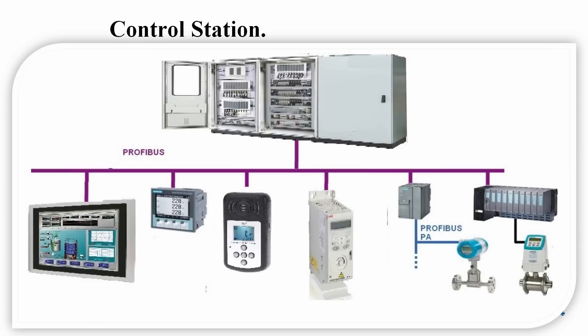Some signals go directly to the terminal blocks of the DCS. The story starts from sensing at the field level, where you have different devices all connected to the DCS. From the DCS, the next level is a switch connected via a fiber ring. The fiber ring is terminated at the switch, which is then connected to the LAN. On the LAN we have operator stations and engineering stations as well. That is the control station.